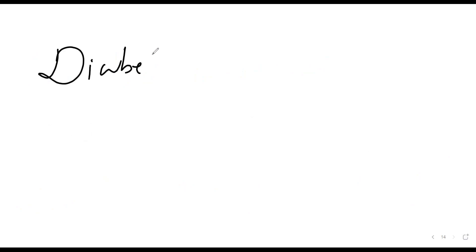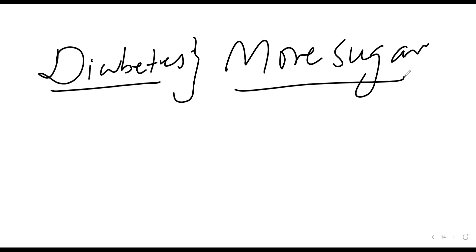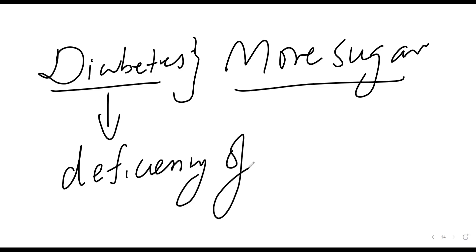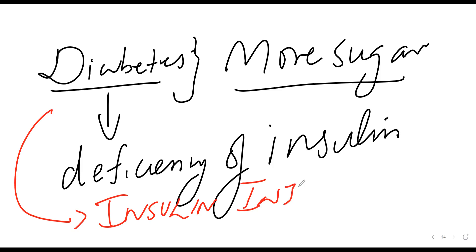An important sub-topic is diabetes. Diabetes is a disease caused by a deficiency of insulin — without insulin, the body cannot control blood sugar levels. The treatment for diabetes is insulin injections.